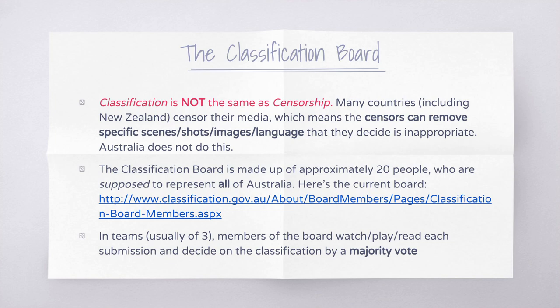Think about how a group of 20 people from a similar demographic based in Sydney are meant to represent individuals from, say, a remote community in Western Australia or a Greek community in Melbourne. The board works in teams of about three: members will watch a film or play snippets of a game and decide on the classification by majority vote.